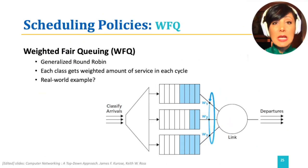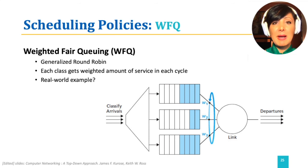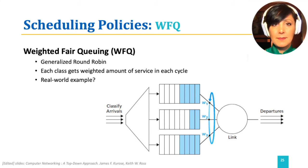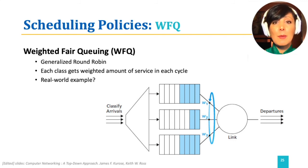Round-robin provides the same opportunity to packets in different queues. But sometimes we need a higher weight of our outgoing link used for a specific set of priority packets. That could be achieved through weighted fair queuing, which is a generalized round-robin that assigns a weighted amount of service to packets in each cycle. It goes around among queues similar to round-robin, but allows a number of packets from each queue proportional to that queue's weight.